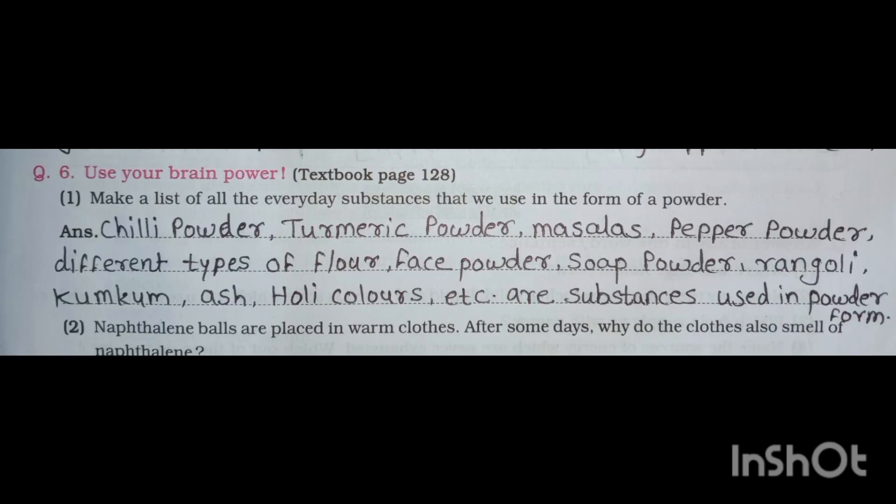Now, Question No. 6 — Use your brain power. Textbook page No. 128. First: make a list of all the everyday substances that we use in the form of powder. Answer: chili powder, turmeric powder, masala, paper powder, different types of flour, face powder, soap powder, rangoli, kumkum, ash, holy colors, etc. are substances used in powder form.